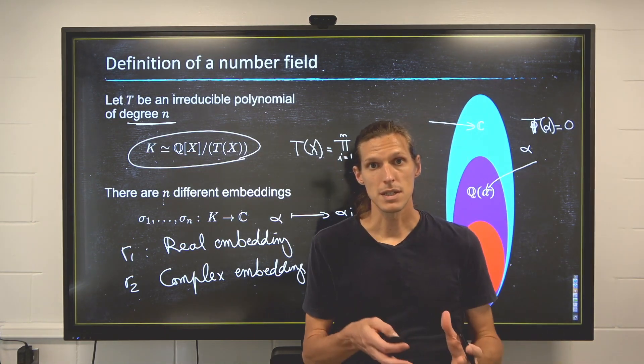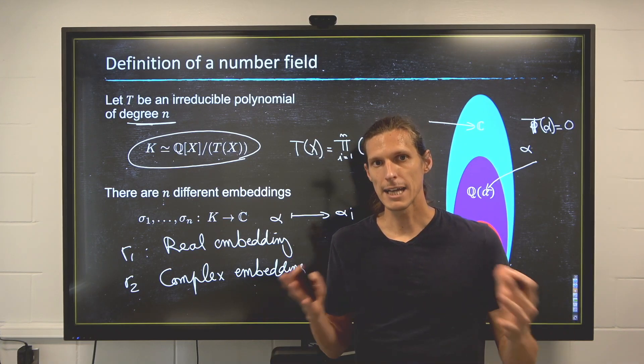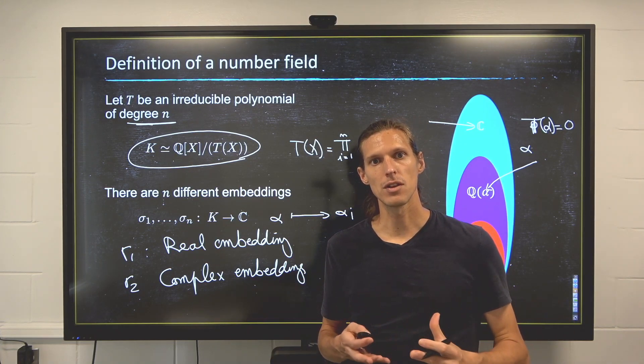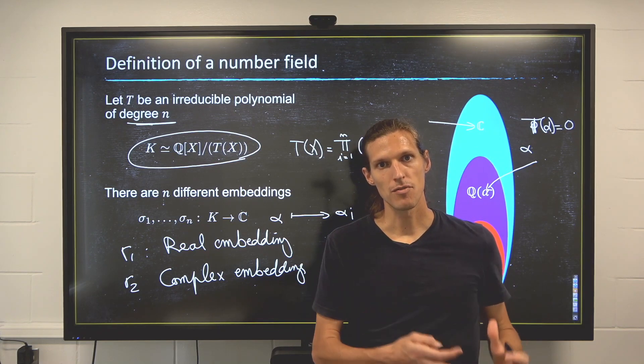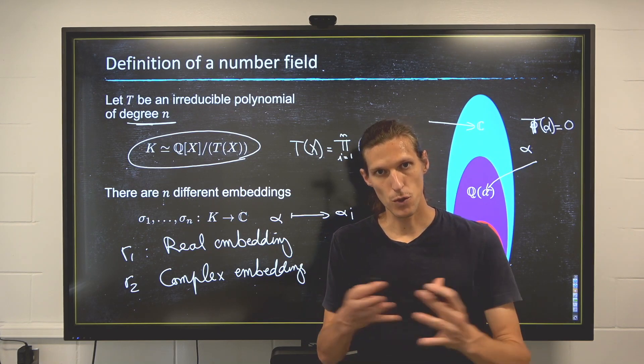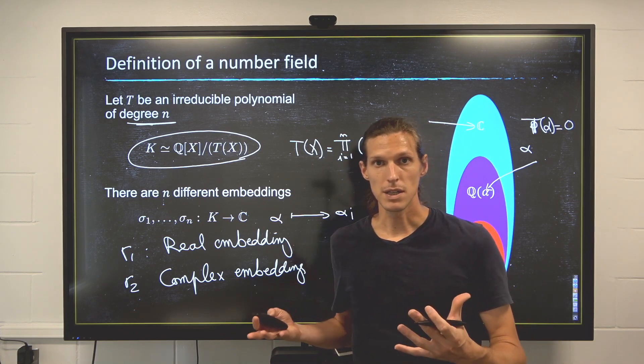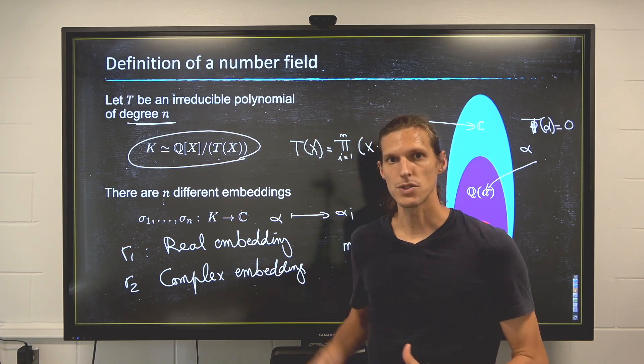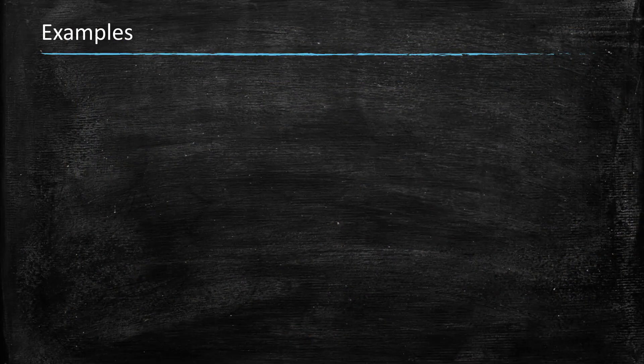So what it means is you have this notion of how the elements behave in your field arithmetically, and then a copy of that description of your field, you can have n copies of that in C via those embeddings. So let's see on an example what it looks like.